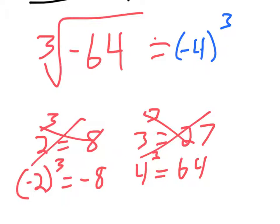Negative 4 times negative 4 makes positive 16, and positive 16 times another negative 4 brings you back to negative 64. So this is what this simplifies to be.